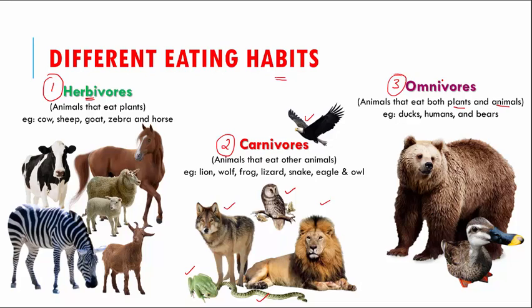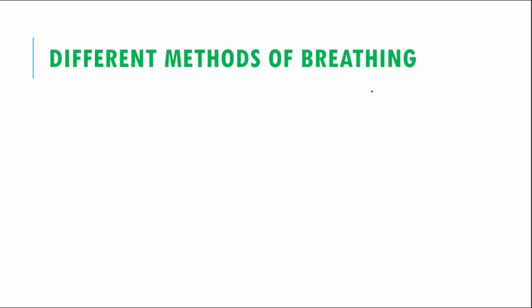Let's move on to the next one. We'll be studying about the various methods of breathing that these animals will use. Now in order to stay alive, animals need to breathe continuously, right? Oxygen has to be taken in during breathing and carbon dioxide is given out. Now different animals use different methods of breathing.